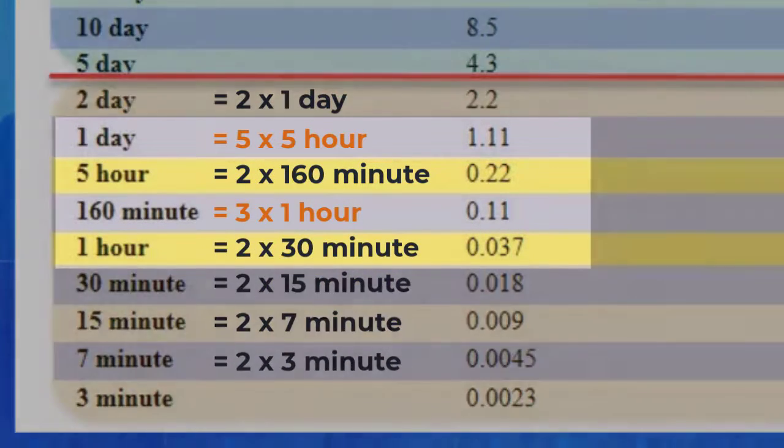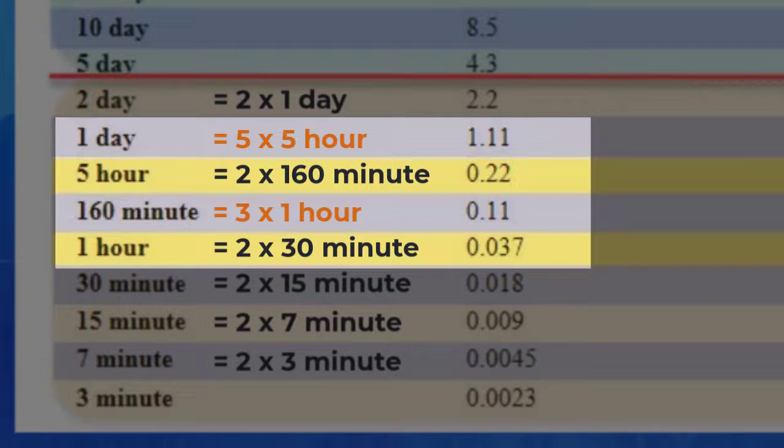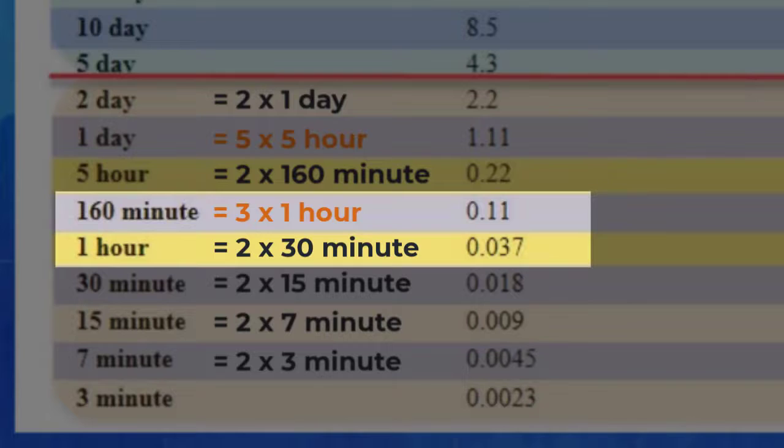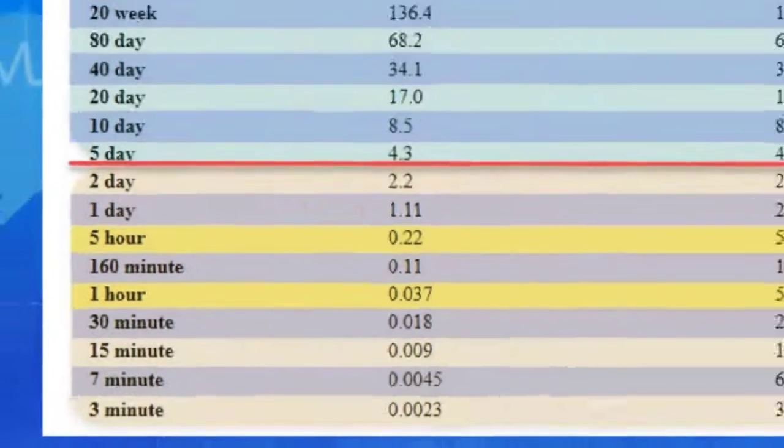That is because those cycles have different ratios with the cycles longer than them. The 5-hour cycle, for instance, has a 5 to 1 ratio with the 1-day cycle. And the 1-hour cycle has a 3 to 1 ratio with the 160-minute cycle.